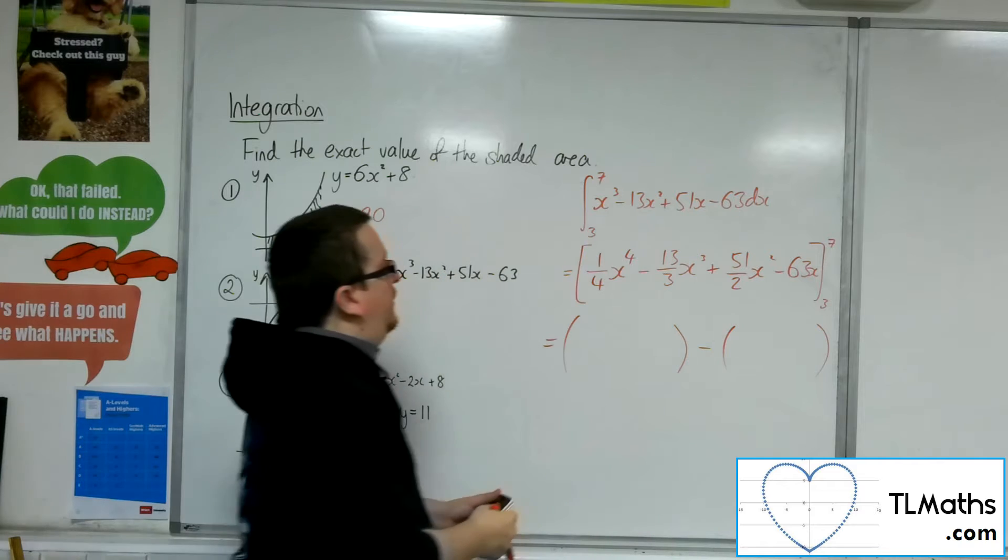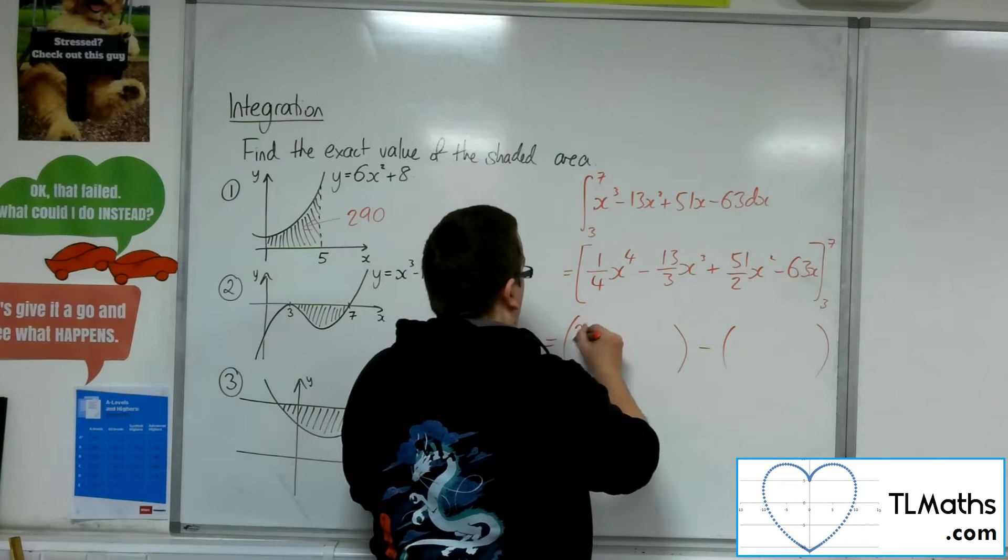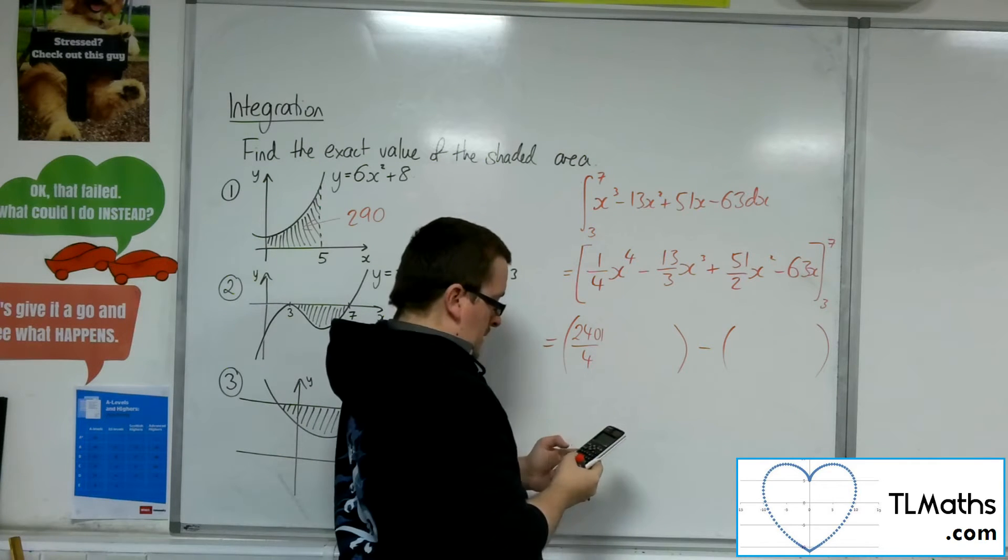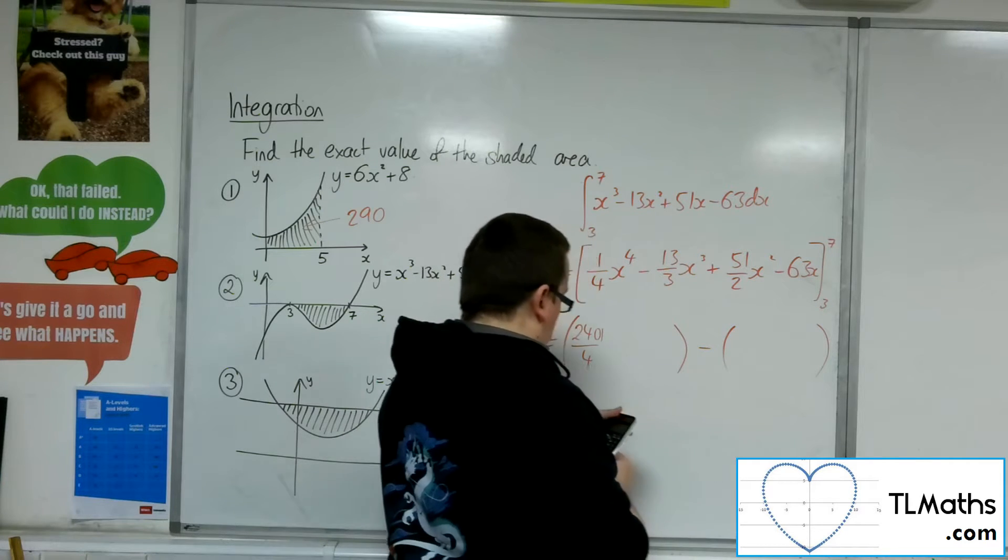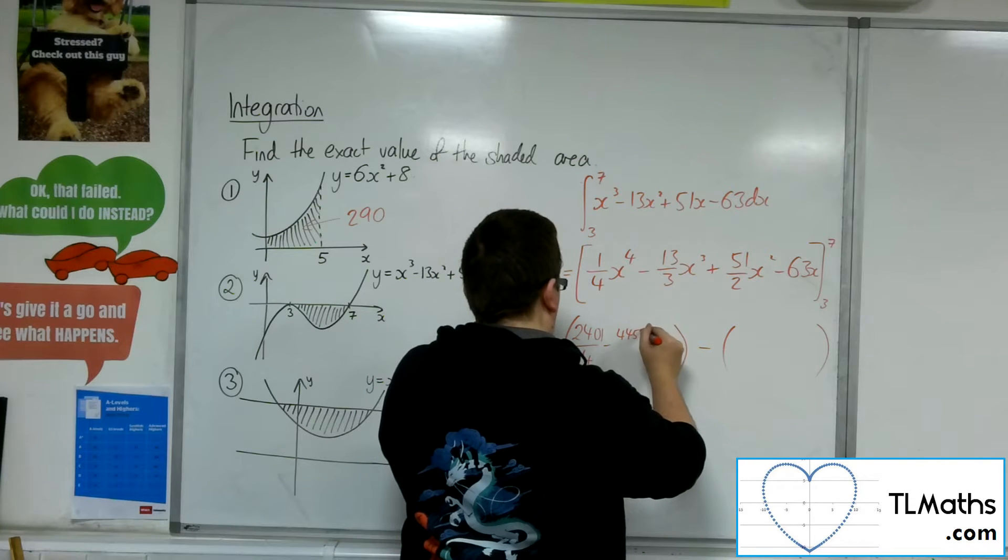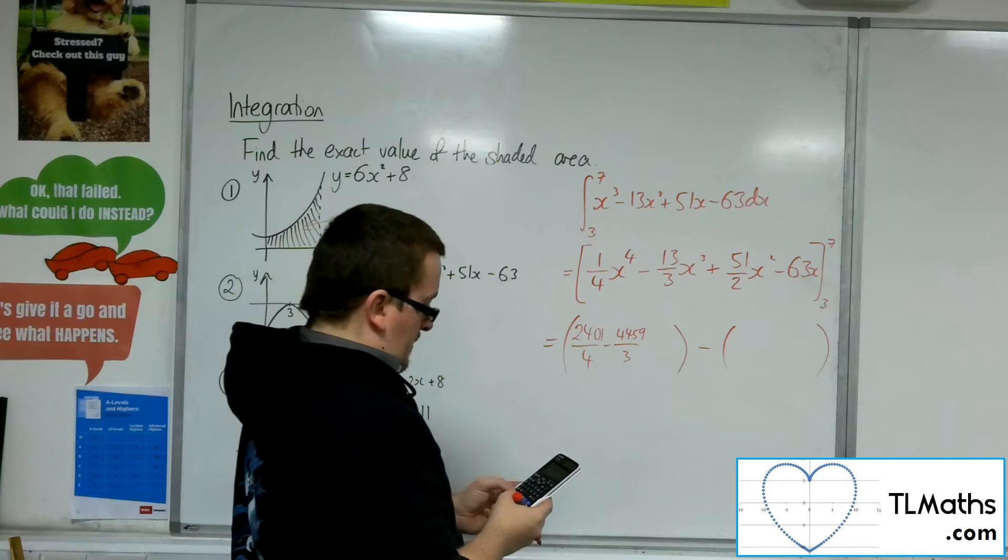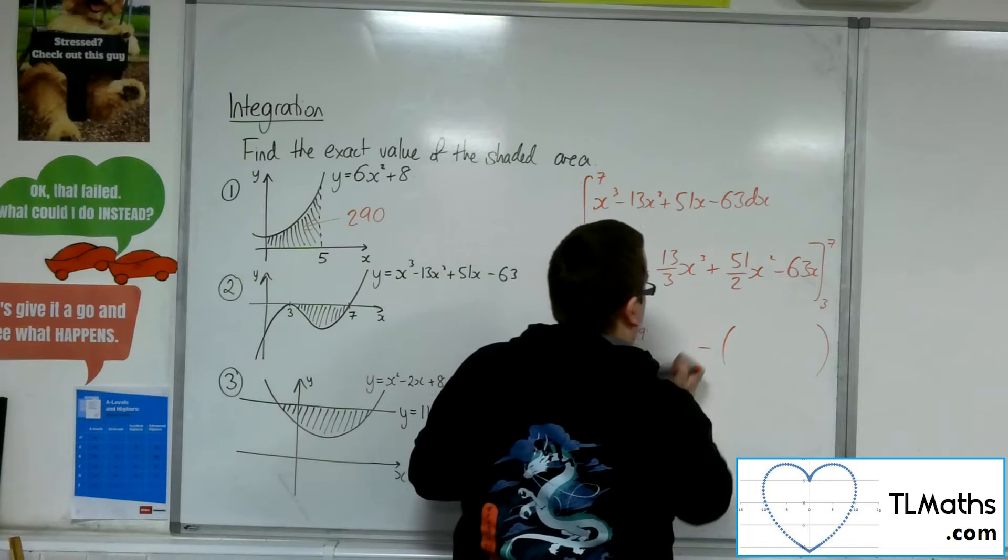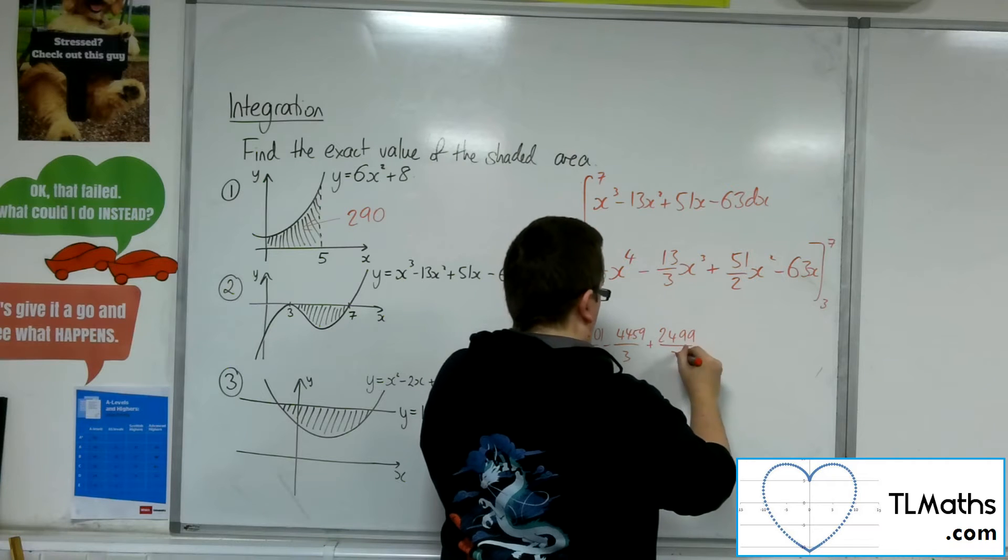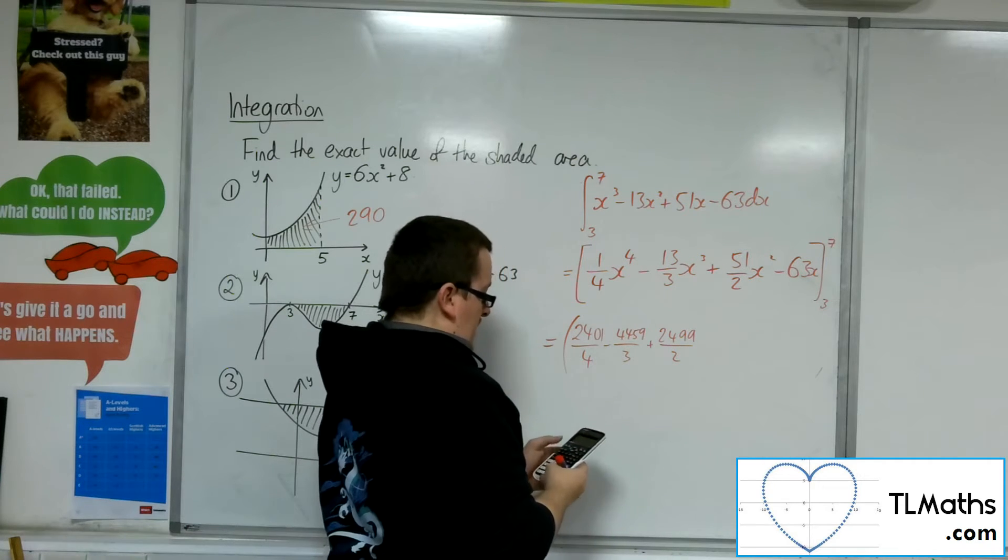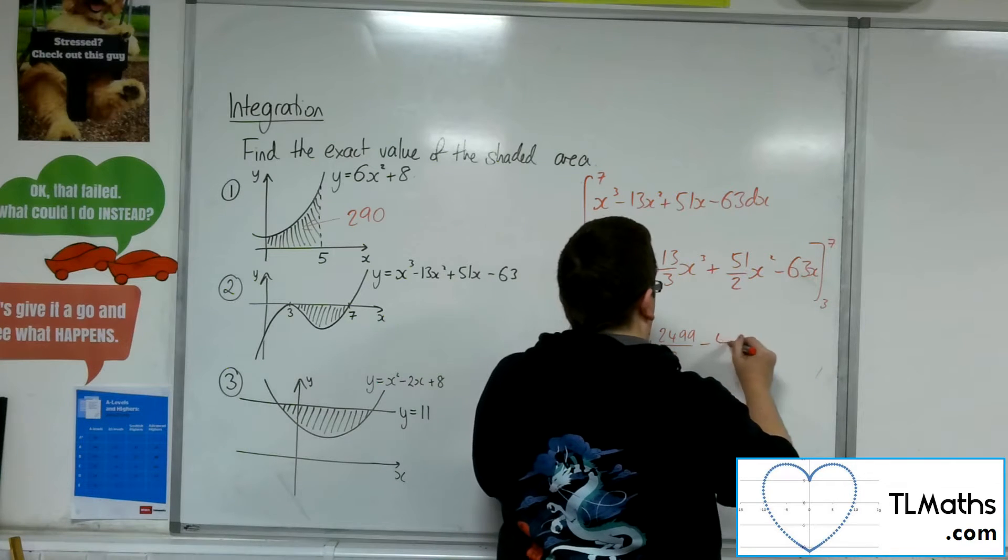All right, let's open up a couple of brackets. So, we have 1 quarter of 7 to the 4, so 2,401 over 4. Then we've got take away 13 thirds of 7 cubed, so take away 4,459 over 3. Then we've got 51 halves times 7 squared, so plus 2,499 over 2, and then take away 63, lots of 7. So, take away 441.